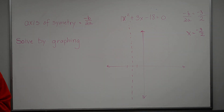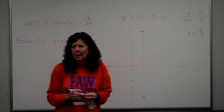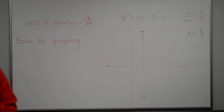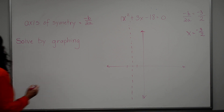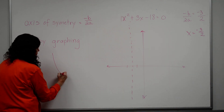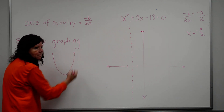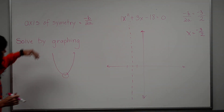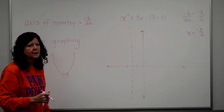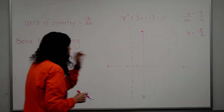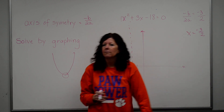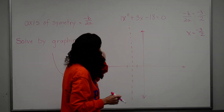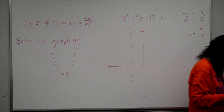That dotted line is going to be right in the middle of my parabola. Now I also need to find the vertex — where it turns. If you shrink yourself down like you're driving along the curve, you're coming down, you get to this point, and then you come back up — that's your vertex, where the slope changes. I already know the x value of the vertex: it's negative 3 over 2, because it lies on the axis of symmetry line. So I can plug that x value into the equation.